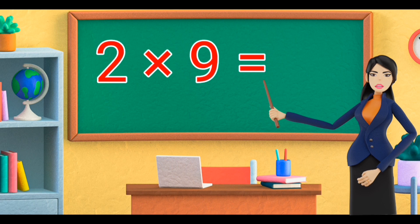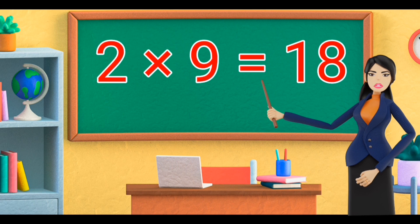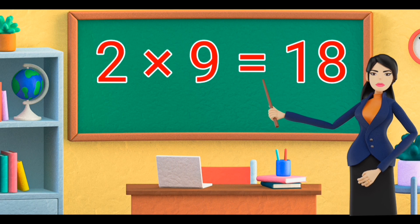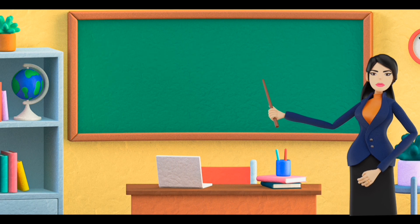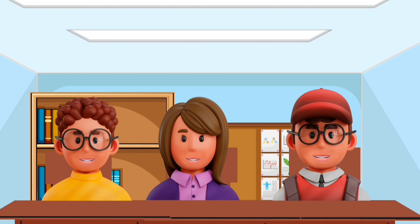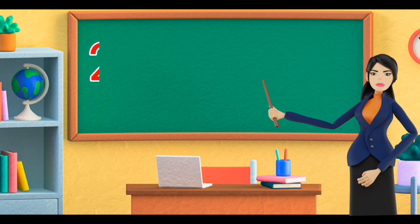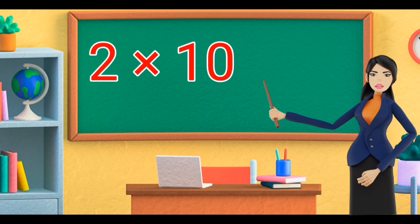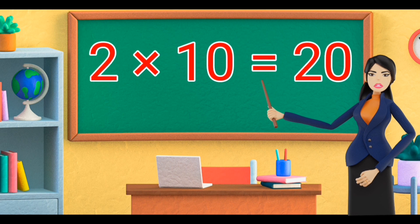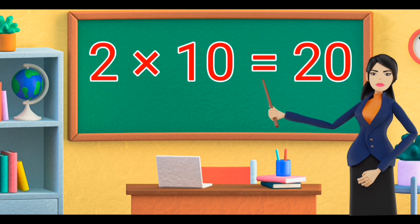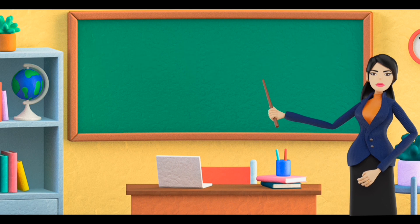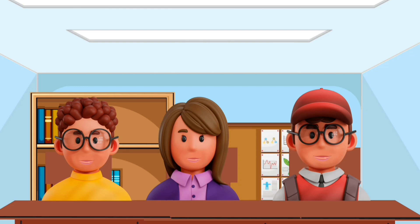Two nines are eighteen. Two nines are eighteen. Two tens are twenty. Two tens are twenty.